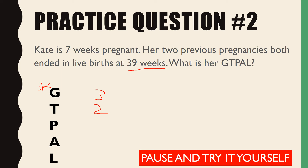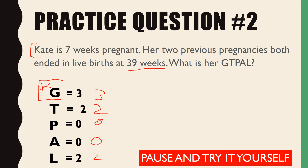No preterm mentioned, P = 0. Nothing about abortions or miscarriages, A = 0. Nothing about the children being stillborn, so L = 2. It's important to remember that the Gravida number is somewhat separate from the rest — just because you count a pregnancy under Gravida doesn't mean you can't also count it under Term. G3 T2 P0 A0 L2 — correct!